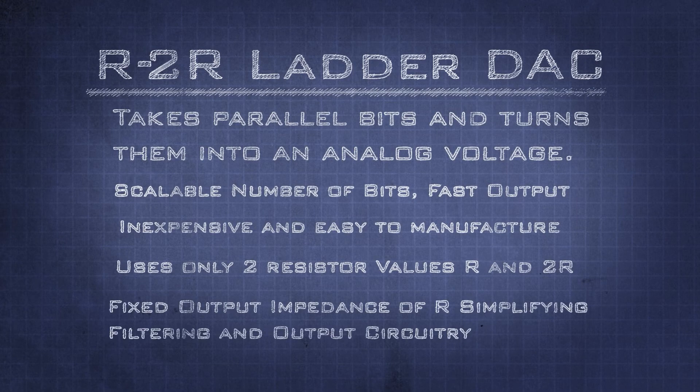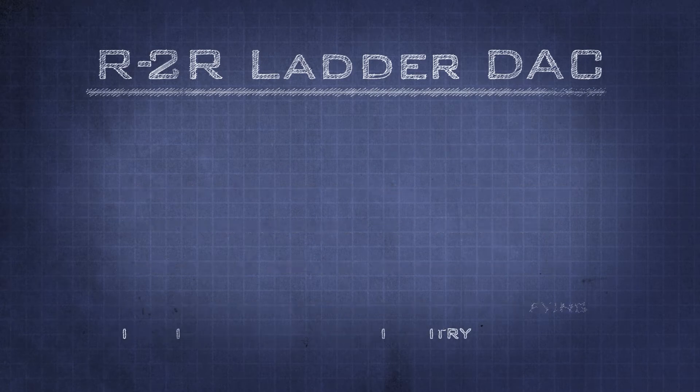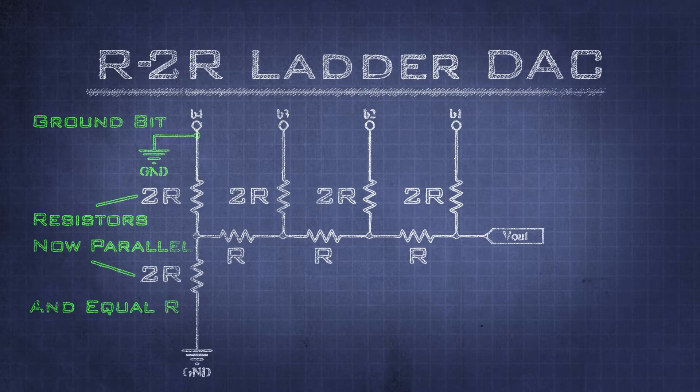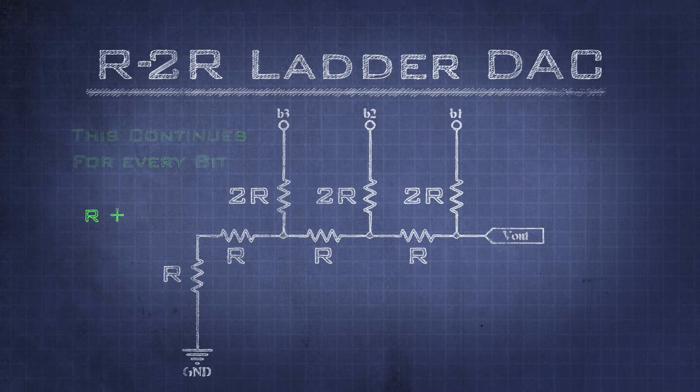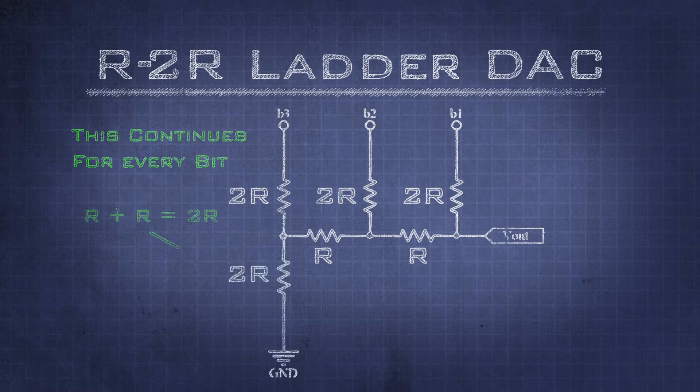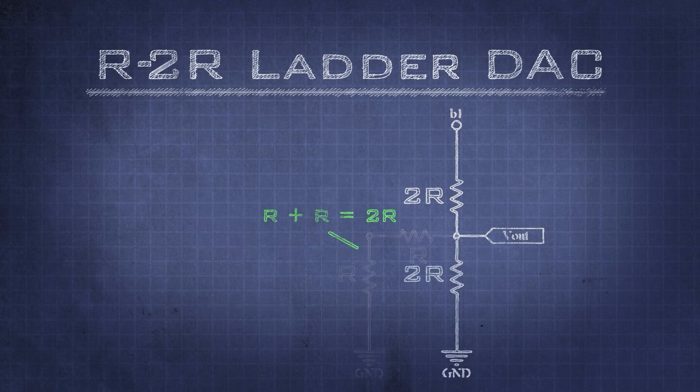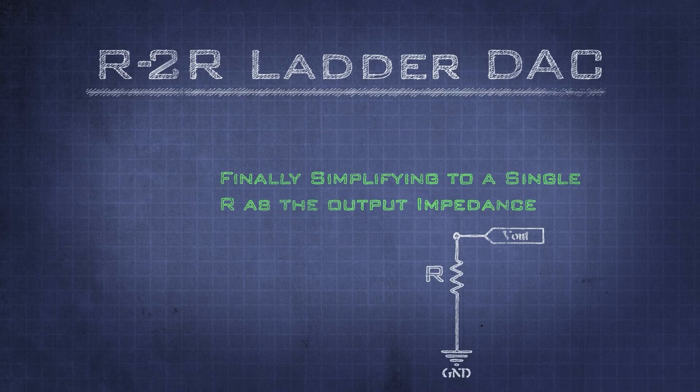Well that part is straightforward thanks to a circuit known as the R-2R ladder DAC. All we need is two values of resistors for this, an R and 2 times R. One of the key features of this type of DAC is the output impedance is R, allowing us to tune the DAC to the load.